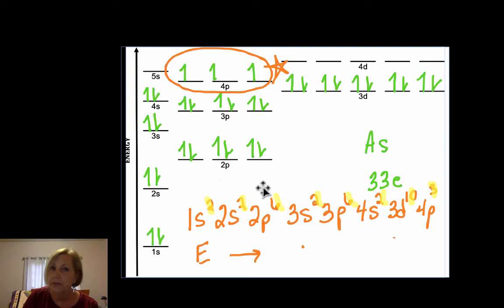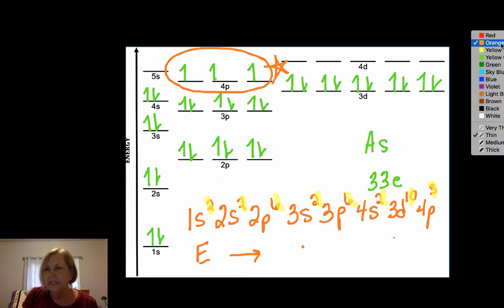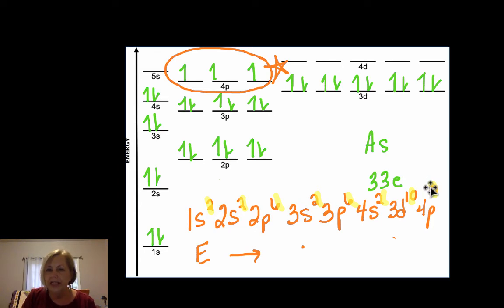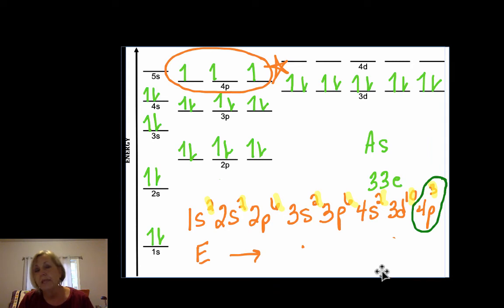But what the orbital diagram does for us is it shows us these unpaired electrons. So, what is not unusual is to do the electron configuration, and then if you need more information, do the orbital diagram of that last sublevel. Obviously you have to do what the question asks you to do, but that would be an example.